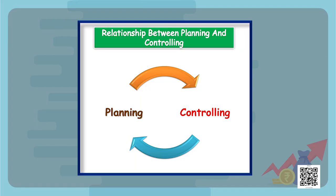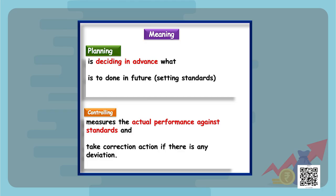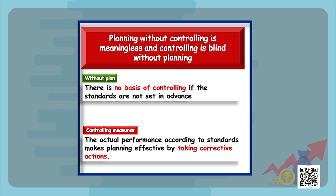Now let's discuss the relationship between planning and controlling. Planning and controlling are the two sides of the same coin — they are interdependent on each other. Planning means deciding in advance what to do and how to do it. Controlling measures the performance of the organization according to the standard set, analyzes the deviation, and then takes corrective action.